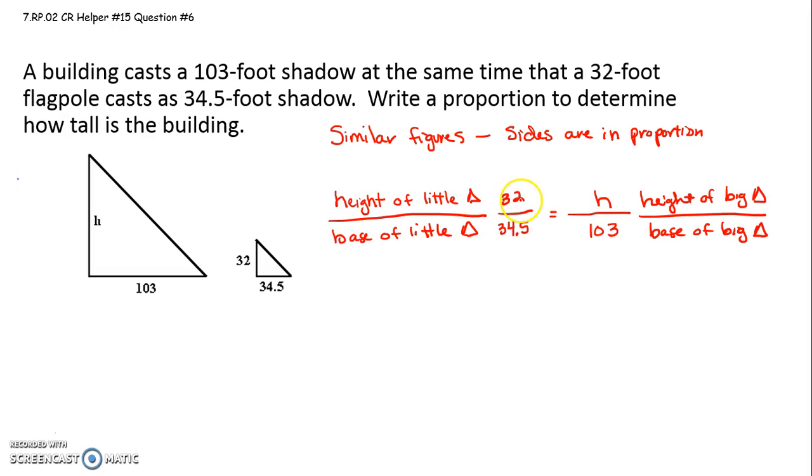So height of little to base of little equals height of big to base of big. And they don't even ask you to figure out the final answer, they just ask you to write the proportion. Lots of proportions can work. I chose to do height of little to base of little, height of big to base of big. I hope that helps.